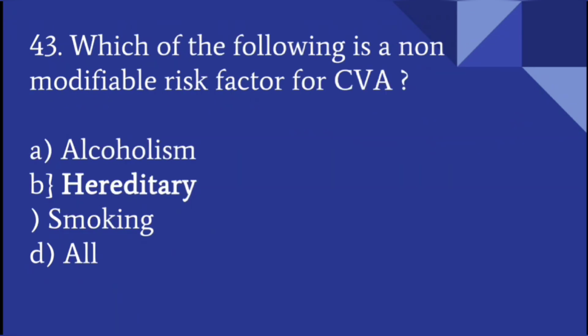Which of the following is a non-modifiable risk factor for CVA (cerebrovascular accident)? Non-modifiable risk factors are those you cannot change. Hereditary is non-modifiable. Alcoholism is a modifiable risk factor — you can stop it. Smoking is also modifiable. So the non-modifiable risk factor is heredity.